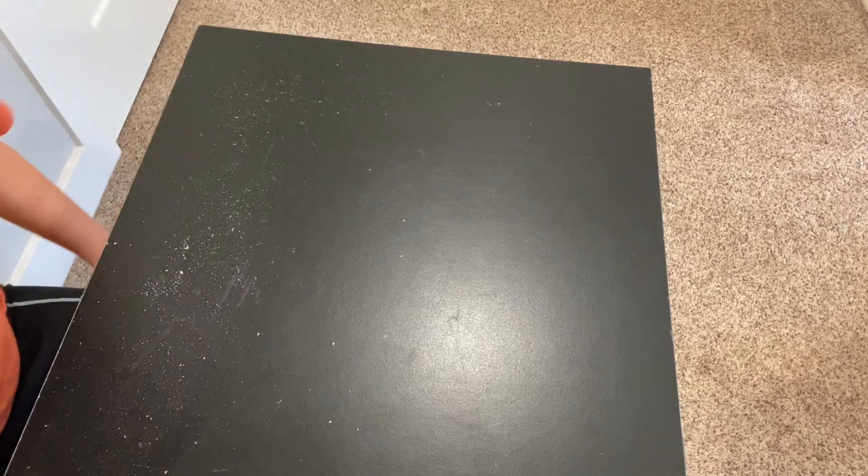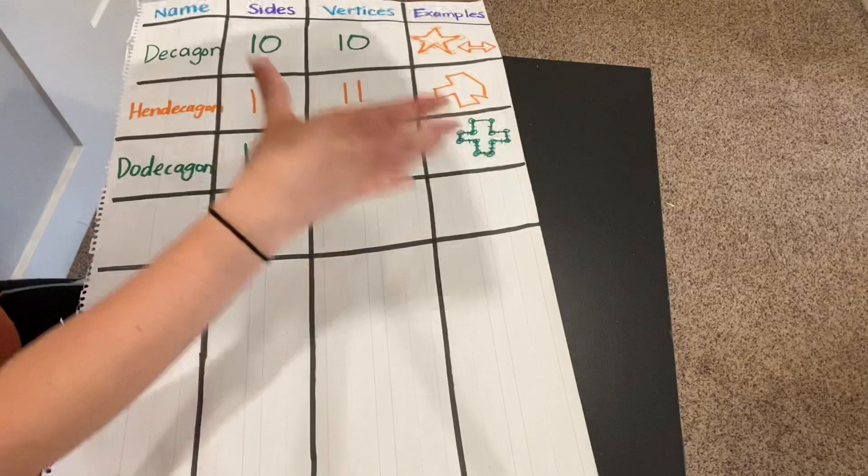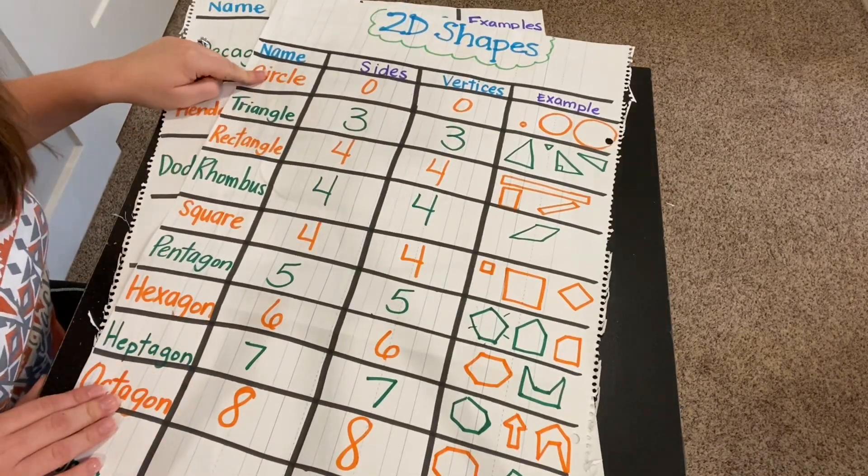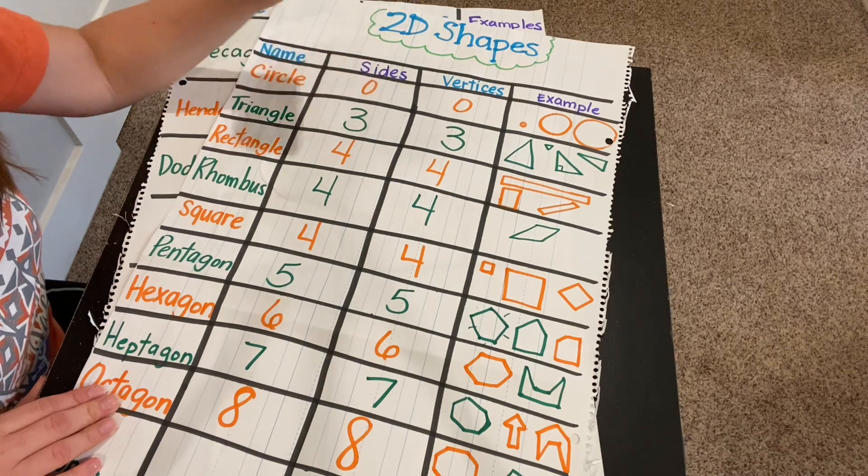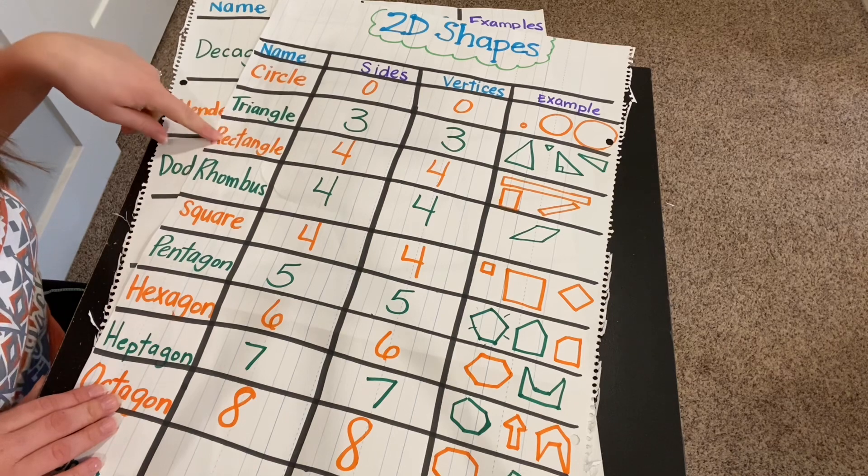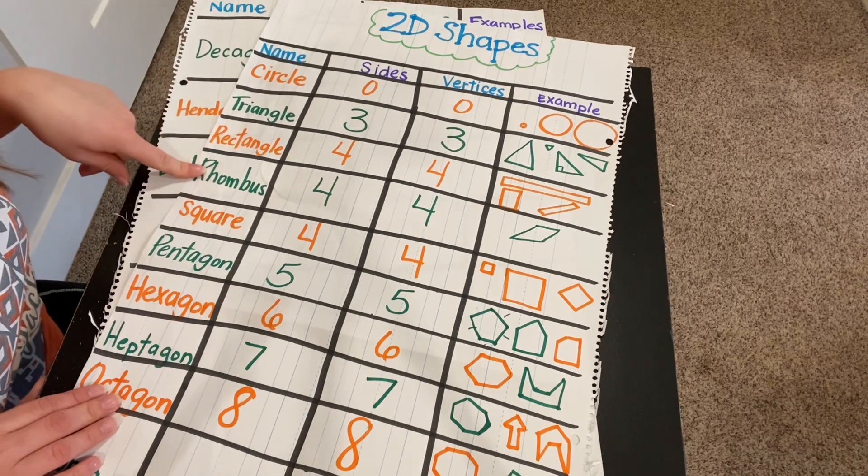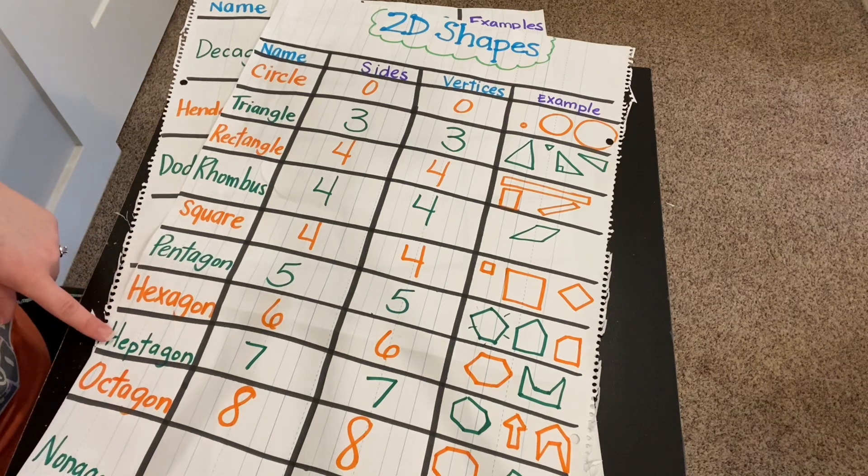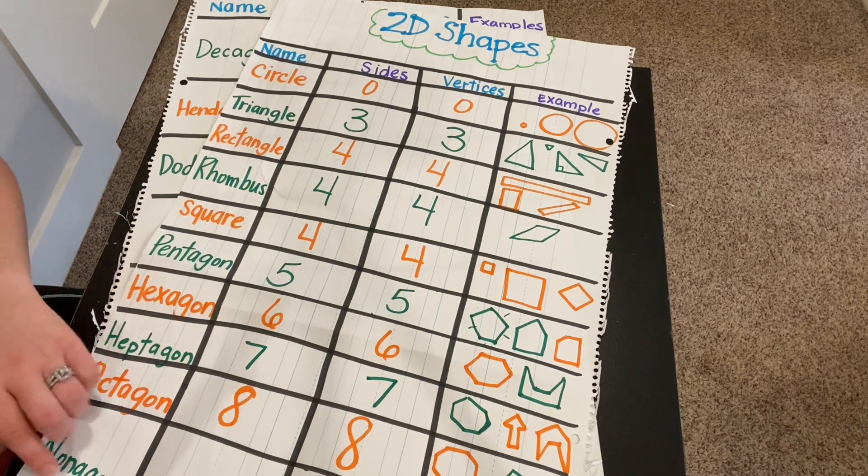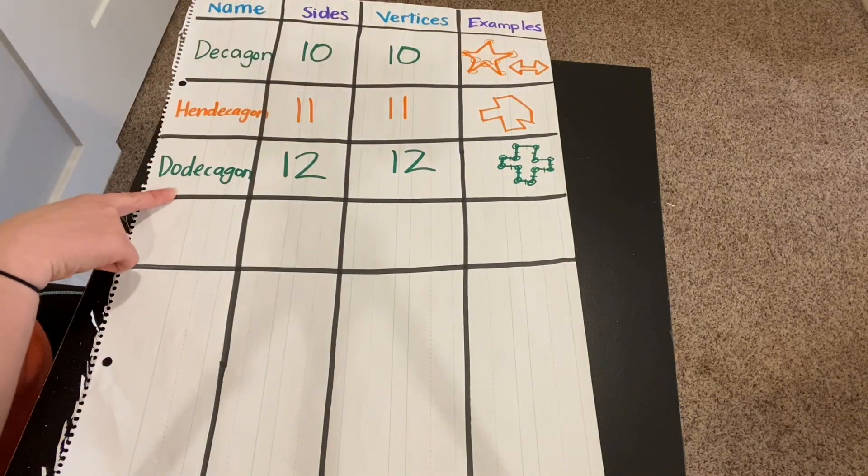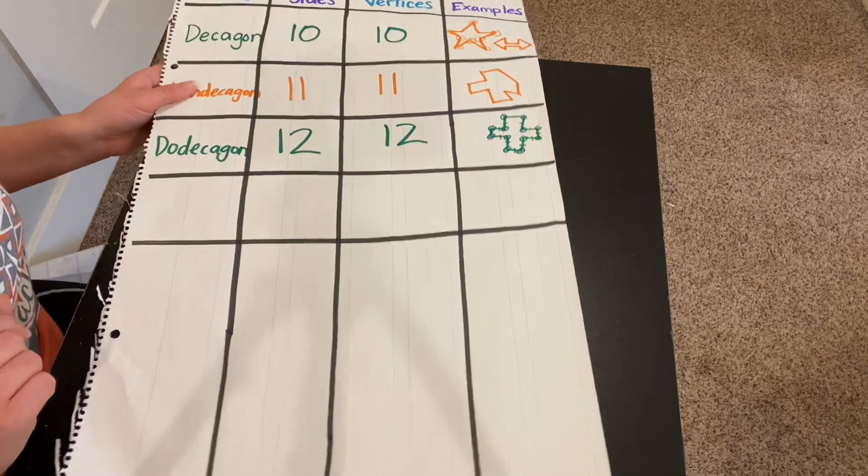All right, so we'll just review the names of the 2D shapes. We learned about a circle and how it has zero sides and zero vertices, triangle, three sides, three vertices, rectangle, rhombus, square, pentagon, hexagon, heptagon, octagon, nonagon, decagon, hendecagon, and dodecagon. So we'll review those again tomorrow.